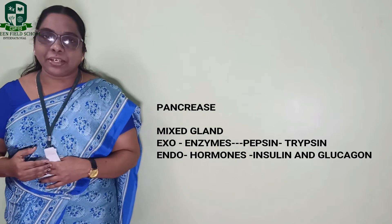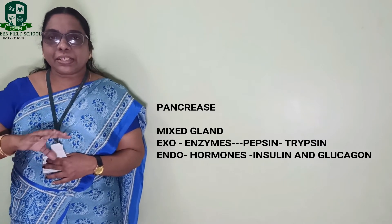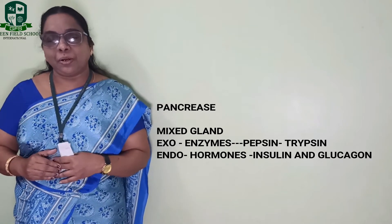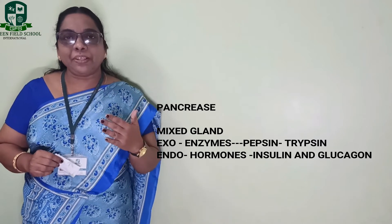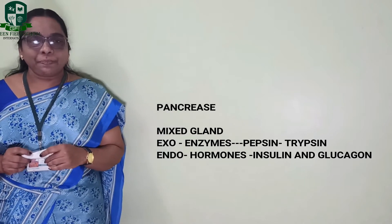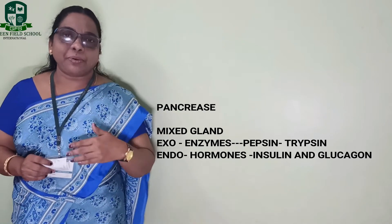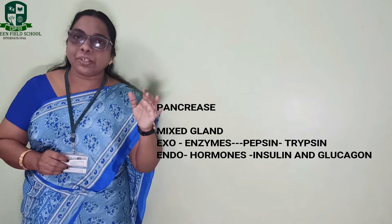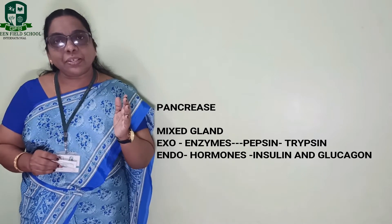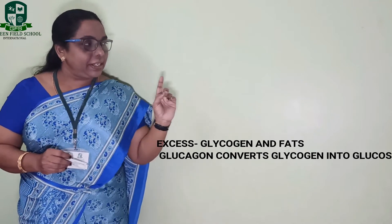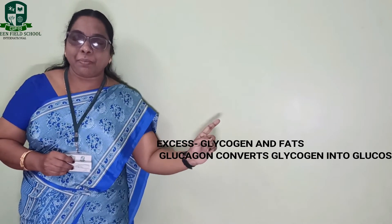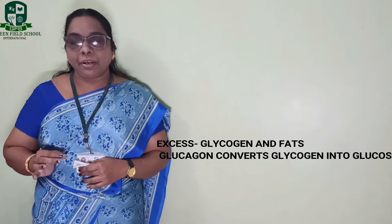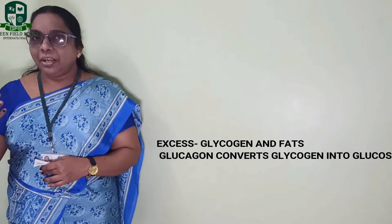As you already studied in Class 7, digestion happens in different parts of the body. Finally, absorption is completed in the small intestine with the help of villi-like projections present in the walls of the small intestine. Once energy is released, any excess glucose in the body is converted into either glycogen or fats.